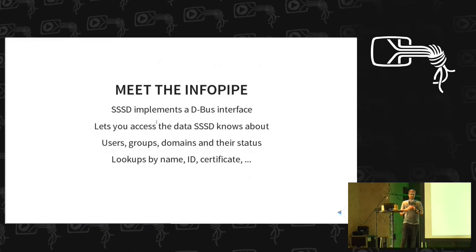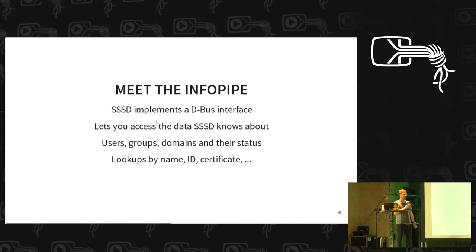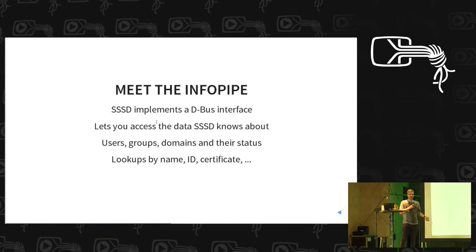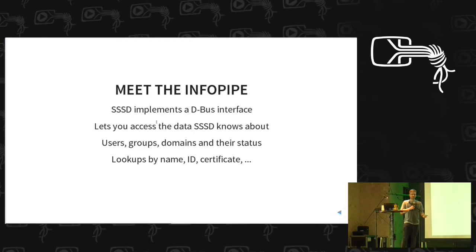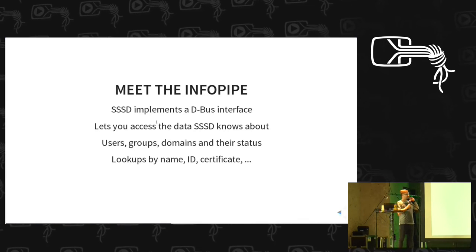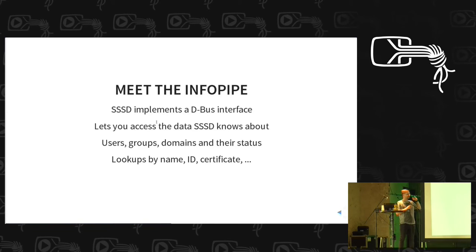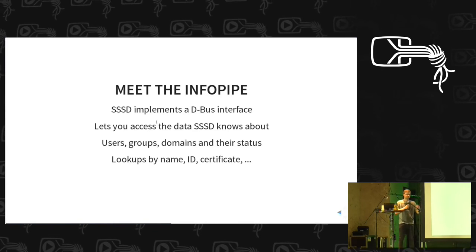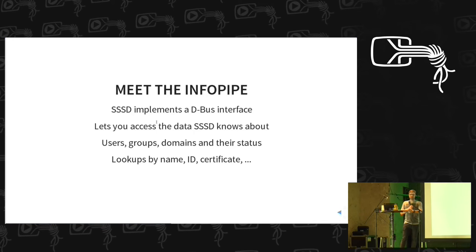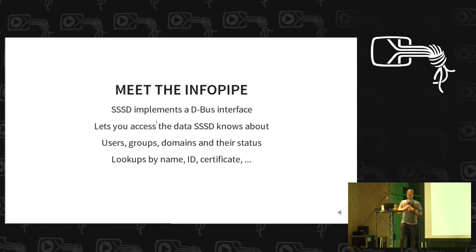So we designed something called the InfoPipe — it's a D-Bus interface that lets you access all the data SSSD knows about: users, groups, even domain status. You can look up users and groups by name, by user ID (useful for filesystem applications that only see the UID), or by certificate (which is what's used for smart card lookups).